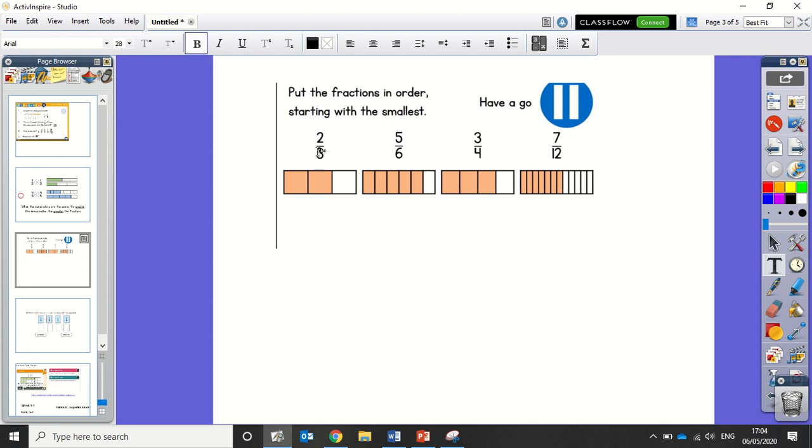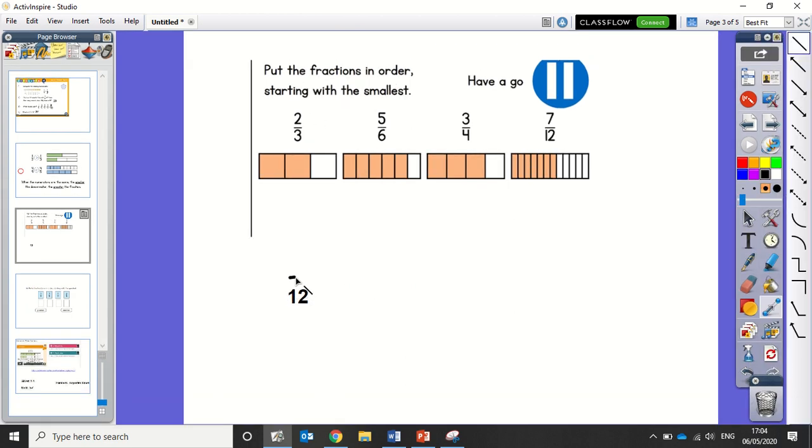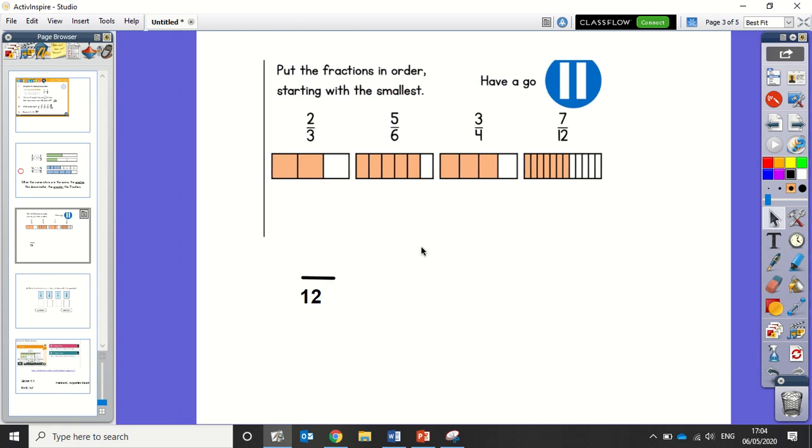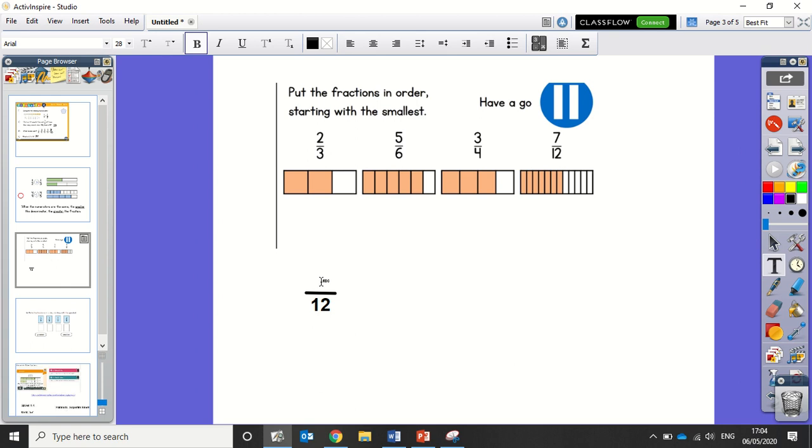So to do that, we have to do 3 times 4 to make a 12. And then because I've timesed my denominator by 4, I need to times my numerator by 4. Which means I need to do 2 times 4, which is 8. There we have 8 twelfths.